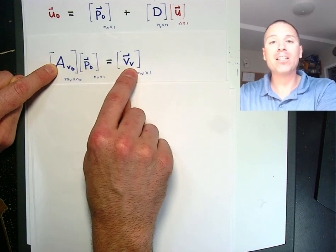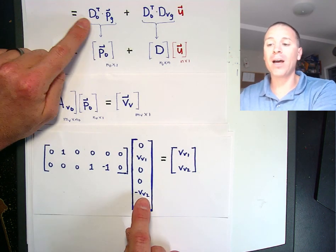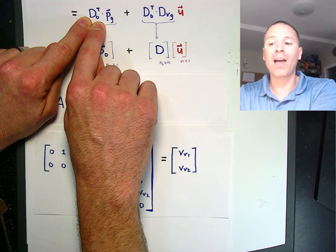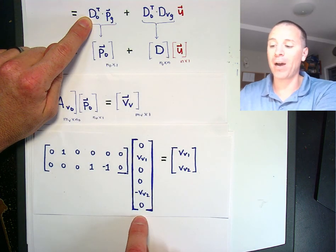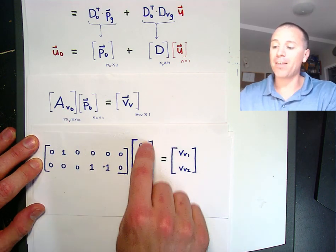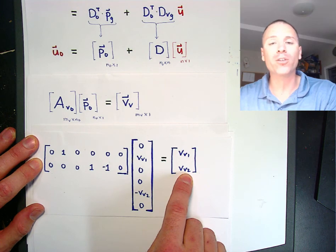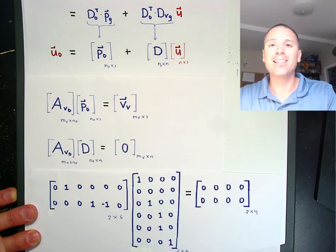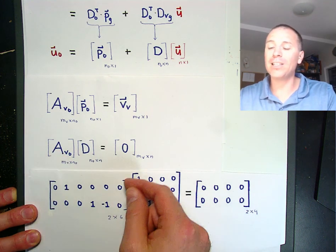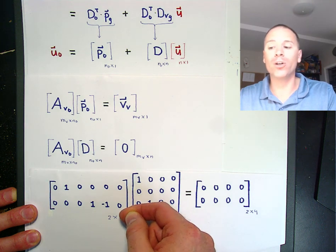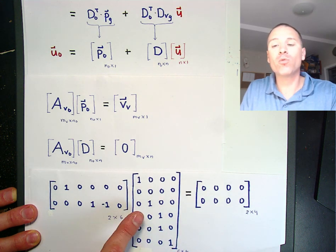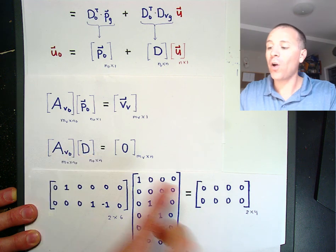Here's the claim for this alternative method of writing the grounded node potential vector in terms of a particular solution and something that sends the matrix a sub v naught to zero. If we multiply a sub v naught — the grounded voltage source sub-block of the grounded incidence matrix — by the particular solution p sub 0 defined above, we get v sub v naught. The vector p sub 0 is the original p sub g with the grounded row deleted — in this case row seven, making it six-by-one. Similarly, the voltage source sub-block is missing the column associated with the ground node, and this matrix D is missing the row associated with the ground node. When we multiply those two together, we get zero.